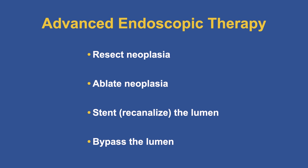Advanced endoscopic therapy captures this idea of moving to endoscopy as a primary choice, and it falls into four categories — four buckets: resecting neoplasia, which can be mucosal or submucosal; ablation; stenting to recanalize the lumen; and the big advance — bypassing the lumen.